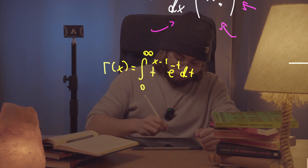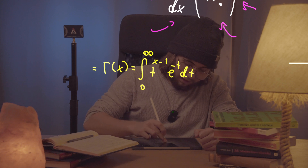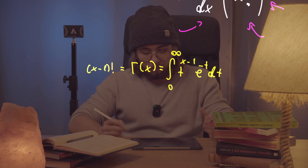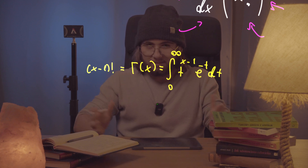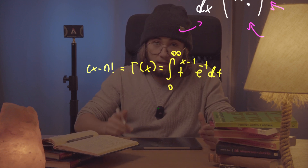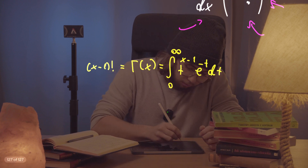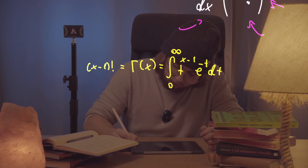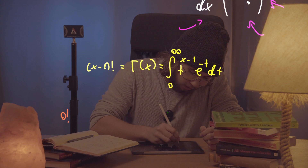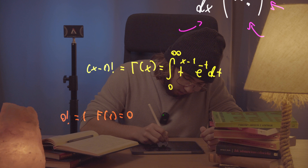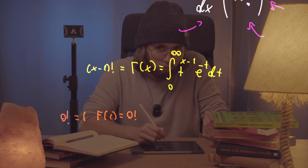We know that gamma of x is equal to (x minus 1) factorial. And we know that 0 factorial is equal to 1. So gamma of 1, which is equal to 0 factorial, should also be equal to 1. Let's check it.